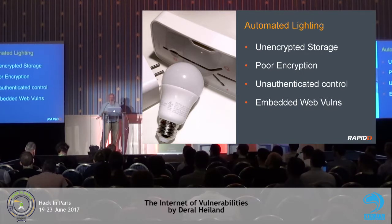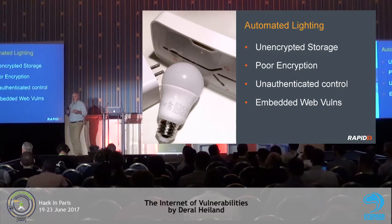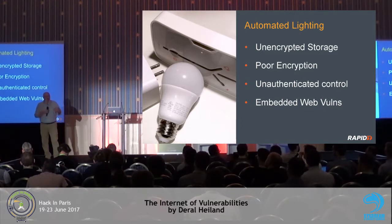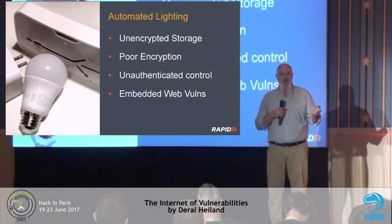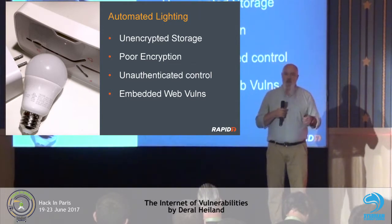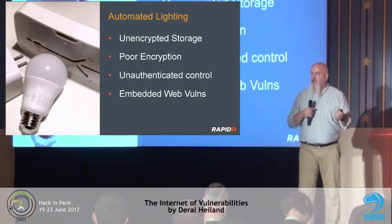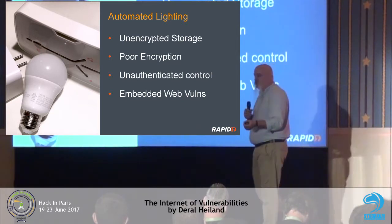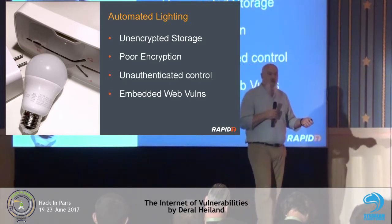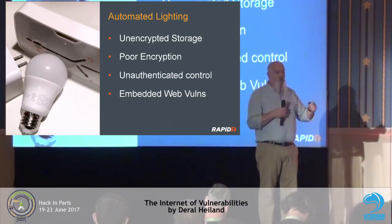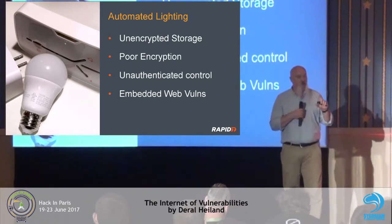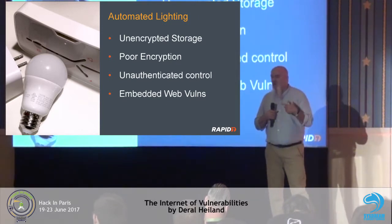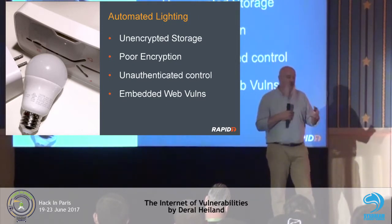Some of the issues we see with automated lighting — and these are common IoT issues: unencrypted storage of data, that's a big one. Poor encryption — SSL is not the end-all, be-all, but it's a simple baseline that most products should communicate in, and we're finding cases where that's not happening. Unauthenticated control — the ability to inject commands into IoT technology and affect it without using the primary control systems. And we actually found embedded web vulnerabilities on devices with web servers; they have the same problems that every other web server potentially has.